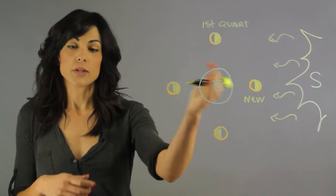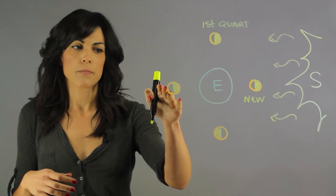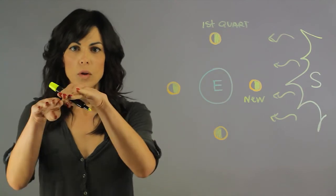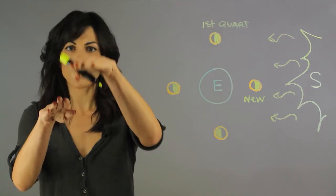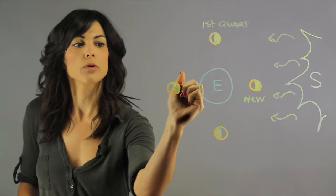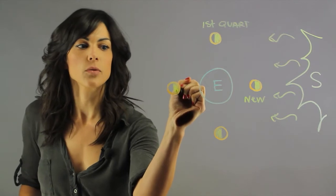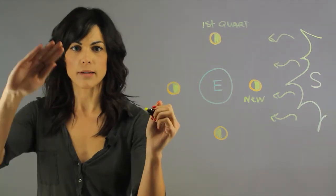Now if it's on the other side, and they're not all lined up so there's still an angular difference, what you would see is the full moon being lit.